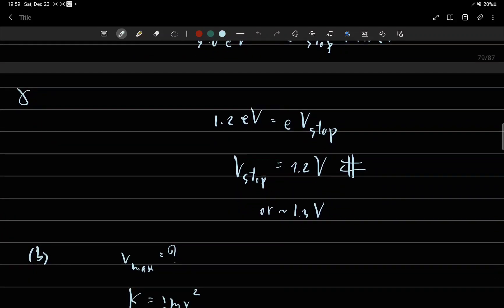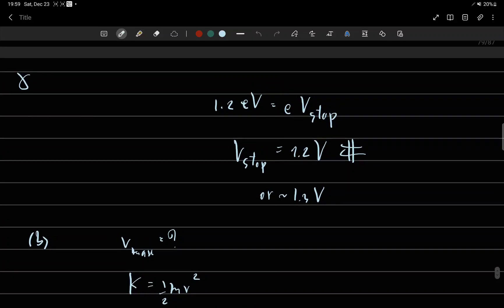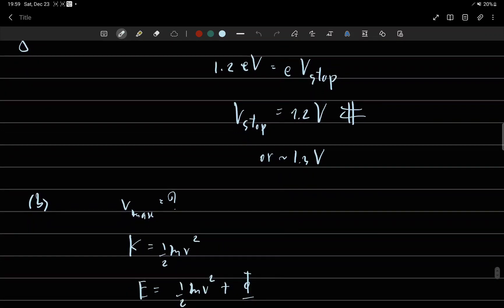And for V-max, kinetic energy is equal to one-half mv squared. So E equals one-half mv squared plus work function.